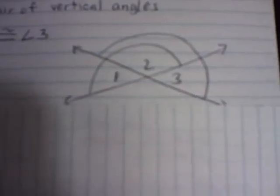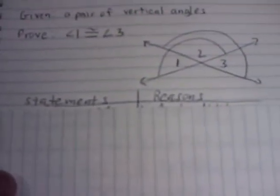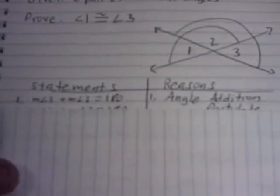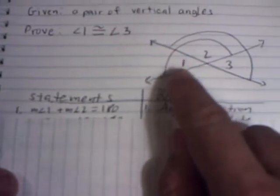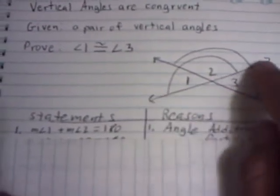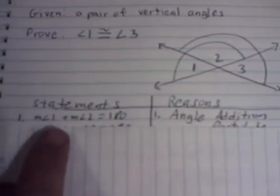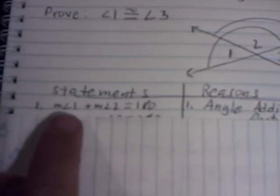On these two lines that are crossing, we have angles one, two, and three. Now we're going to set up the proof with statements and reasons. The first statement, looking at the drawing, is that angles one and two make a straight line, so angles one and two together equal 180 degrees. On the left side of the statement we have: angle one plus angle two equals 180.